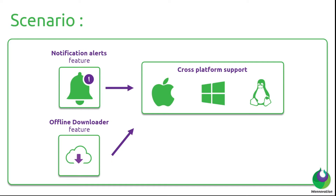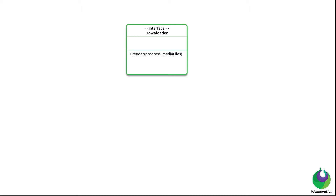This downloader can have different appearances based on the operating system. For example, the progress bar shown in the downloader can look entirely different on Mac OS versus Windows or Linux. So it seems like we're facing the same problem of making the feature support multiple looks and feels. Let's see if we can solve this with the factory method pattern, starting by mapping our downloader problem into a class diagram — creating an interface for the downloader and thinking of all possible methods.